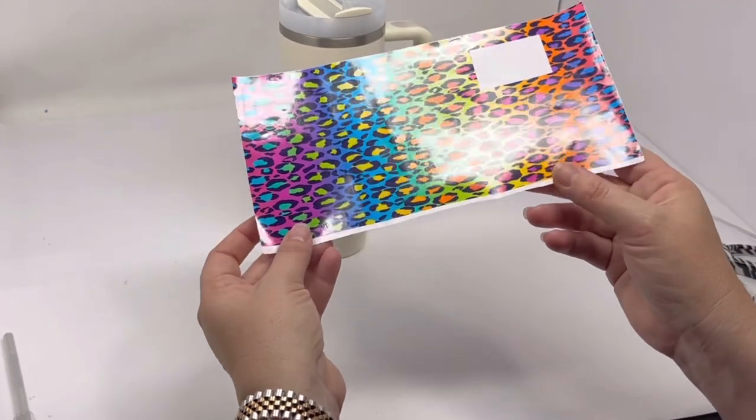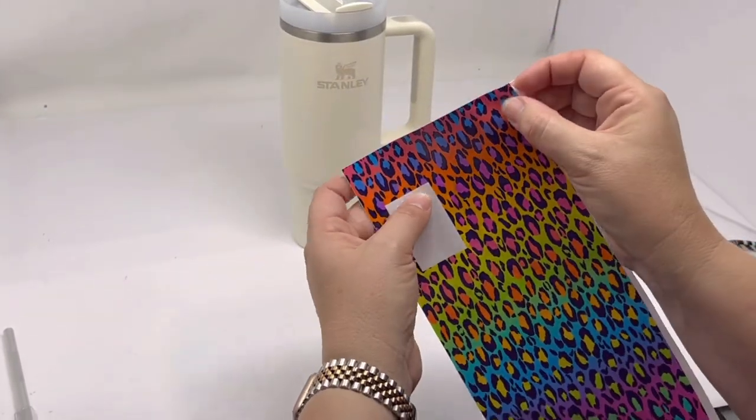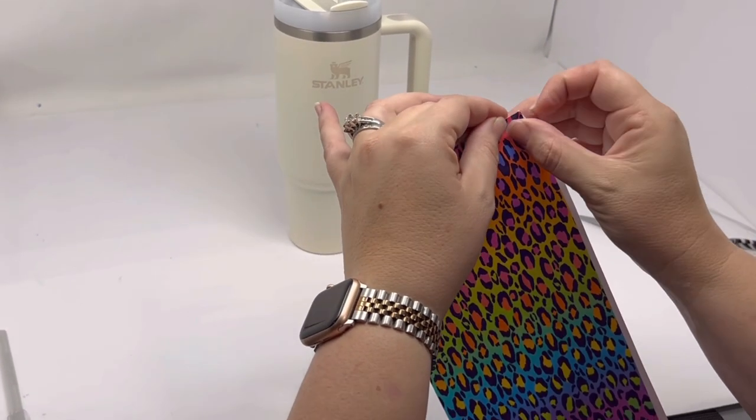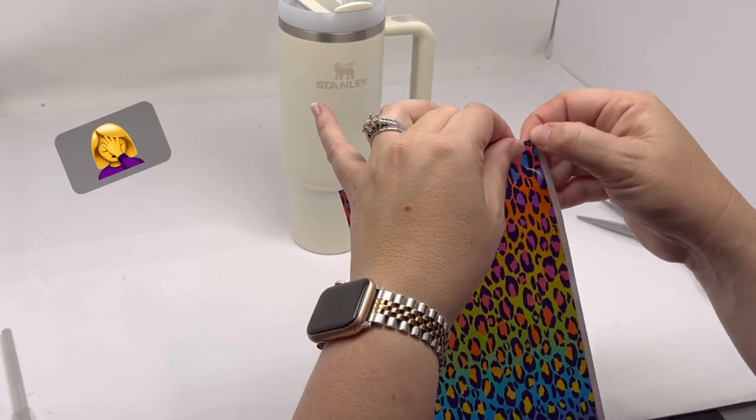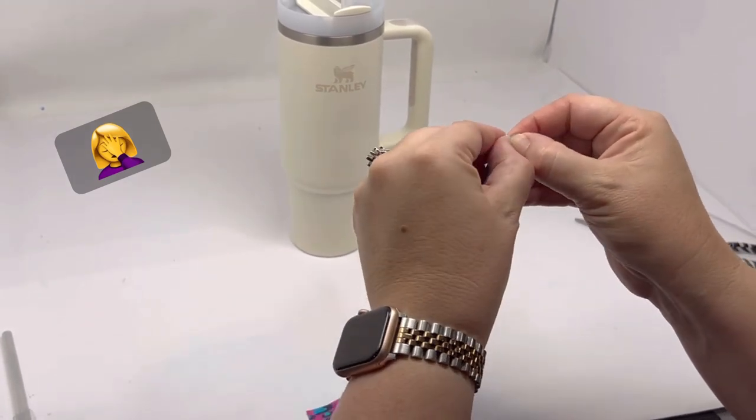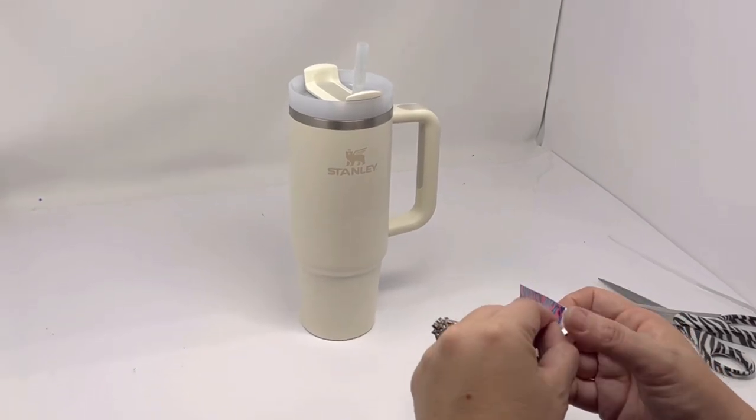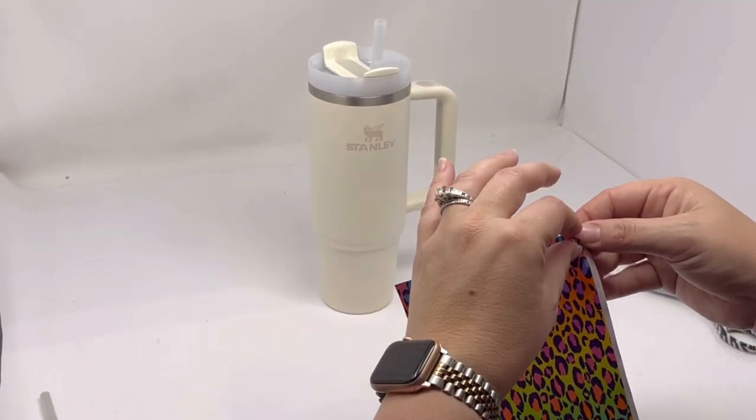Then I take this corner here, fold it down so I can lift it off the paper. Okay, sorry, technical difficulties. Got it now off the paper, off the backing.